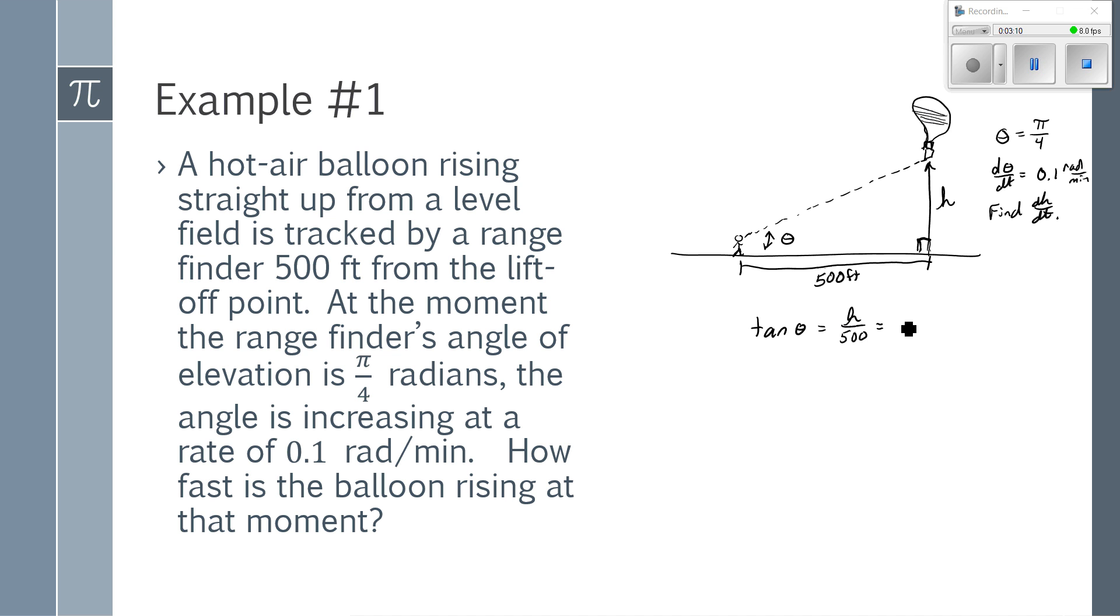For ease of use, h over 500 is the same as 1 over 500 times h, because 1 over 500 is a constant multiple. I then want to take the derivative of this equation with respect to time. This is my sole calculus step.